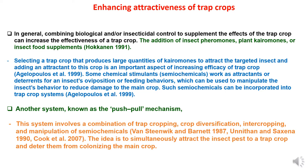Such semi-chemicals can be incorporated into the trap crop system. In another system known as the push-pull mechanism, this involves a combination of trap cropping, crop diversification, intercropping, and manipulation of semi-chemicals. The idea is to simultaneously attract insect pests to a trap crop and deter them from colonizing the main crop.